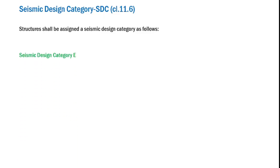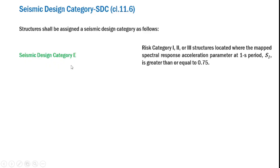Now let us see how structures are assigned the various seismic design categories. First, we consider the basis for SDC E. Category E involves risk category 1, 2, or 3 structures located where the mapped spectral response acceleration parameter at a one-second period, S1, is greater than or equal to 0.75. So for category E, the hazard requirement is S1 ≥ 0.75, and it involves risk categories 1, 2, or 3.